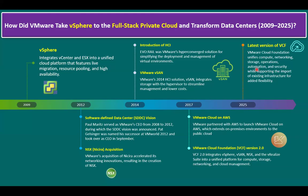For automation, previously we had vRealize Automation, in short form VRA. Later it was enhanced to ARIA Automation. Now the latest name, after adding additional key features, is VCF Automation. Security has also been enhanced across all layers, while supporting another key feature — importing existing infrastructure for added flexibility. If you have an existing vSphere infrastructure, you can easily import it to the latest version of VCF 9.0.